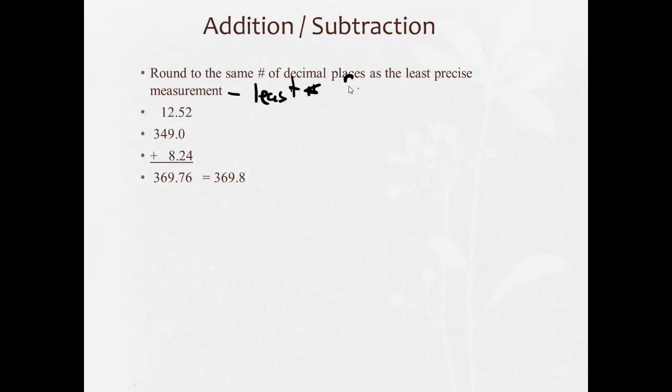the least number of sig figs after the decimal. So this has two after the decimal, this has one after the decimal, this has two after the decimal.